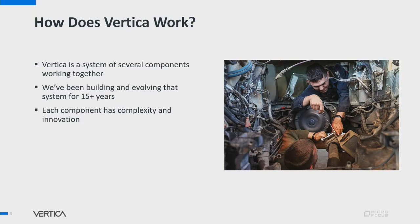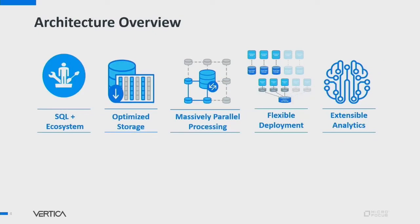The purpose of this talk is to go beyond just what Vertica is and tell you a little bit about how Vertica works. We've been building and evolving the product for over 15 years. To organize our thoughts today, we're going to break the system down into components and look at key architectural decisions. Those decisions include: making Vertica a relational database supporting SQL, its optimized storage system, massively parallel processing, flexible deployment strategies, and extensible analytics.